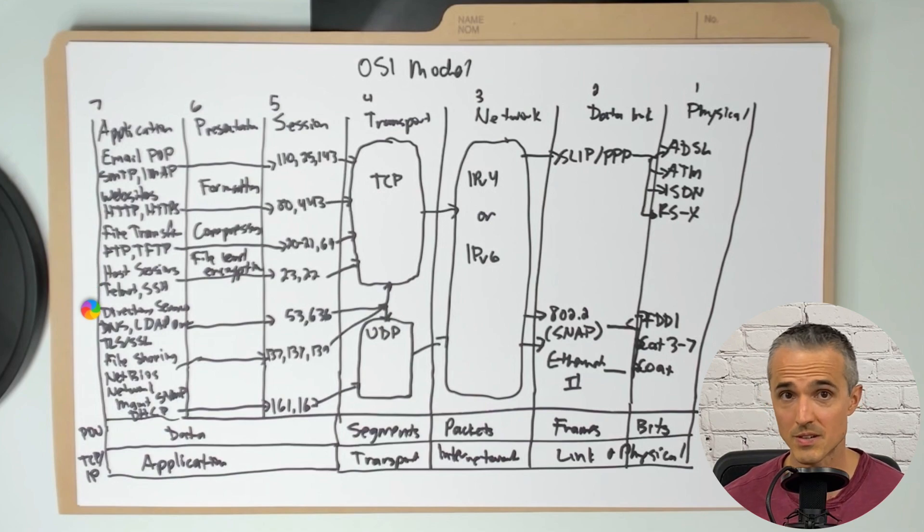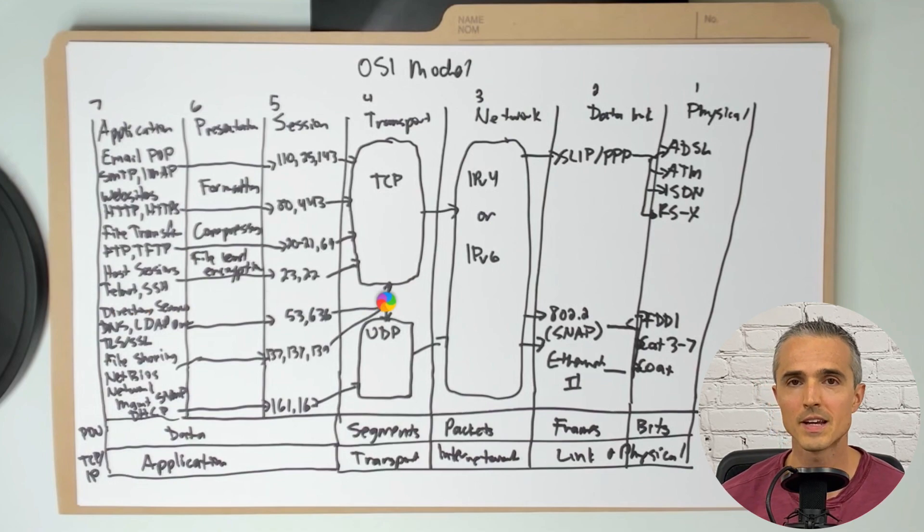And then we get into directory services. DNS, domain name service. That's the phone book for the internet. LDAP, lightweight directory access protocol over SSL or TLS. Those are on ports 53 and 636 using both TCP and the connectionless UDP, user datagram protocol.